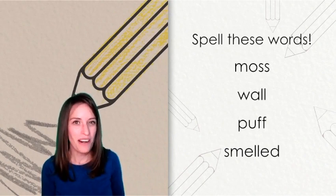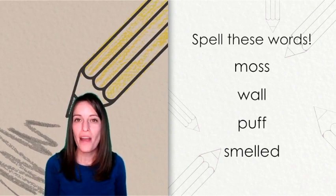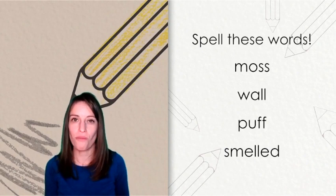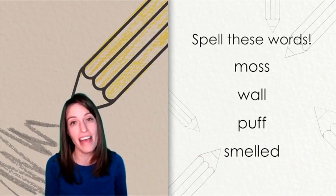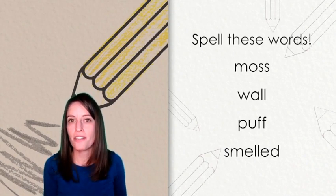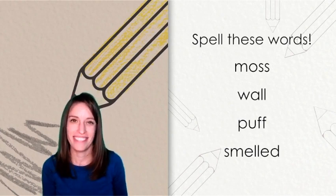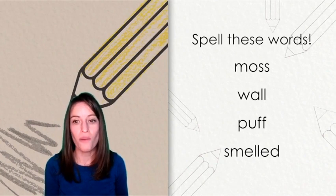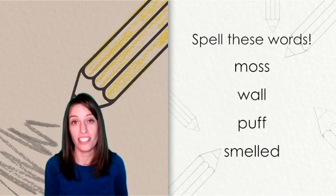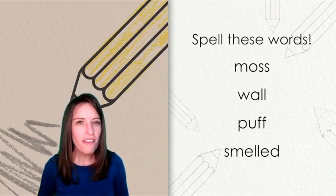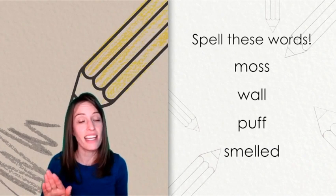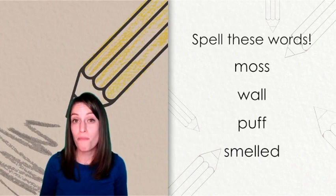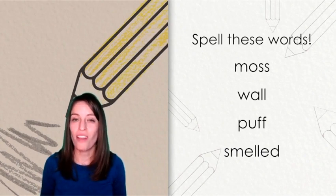The next word, puff. P-U-F-F. It also followed the floss rule because you double an F if it comes after the short vowel U. And finally, our challenge word was smelled. If you cover up that E-D ending, you'll see the word smell. The word smell follows the floss rule.